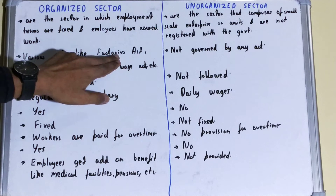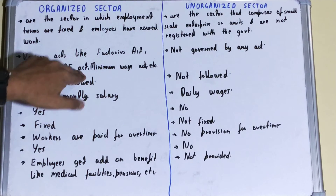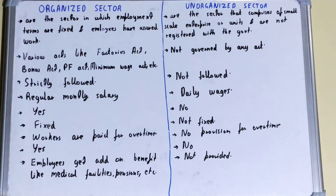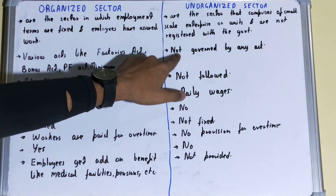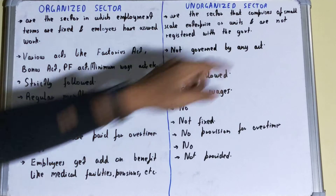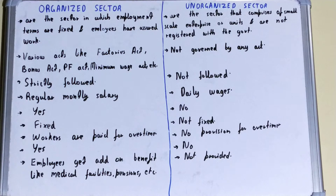If we talk about what governs these sectors, then the organized sector is governed by various acts like the Factories Act, Bonus Act, PF Act, and Minimum Wage Act. But in the case of the unorganized sector, since they are not registered with the government, they are not governed by any act issued by the government.